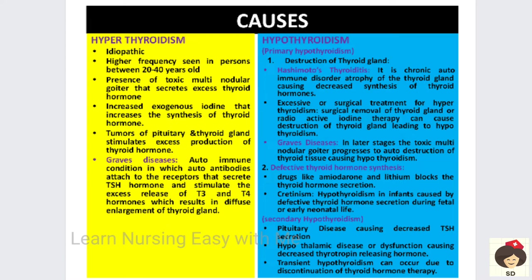Another condition is Graves' disease, which is an autoimmune disorder. In Graves' disease, autoantibodies attach to TSH receptors in the pituitary gland and cause the receptors to produce more and more thyroid stimulating hormone. When TSH is stimulated, it stimulates the thyroid gland to release T3 and T4, leading to enlargement of the thyroid gland.